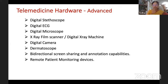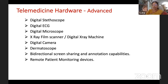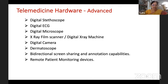Bi-directional screen sharing allows two doctors to view the same MRI image simultaneously at remote ends, with annotations made by one doctor visible to the other instantly — for example, marking tumor volume, length, and breadth. Remote patient monitoring devices include digital ECG devices, digital body scale, urology analyzer, BP monitor, pulse oximeter, smart watches, fitness bands, etc.